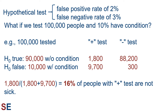Of the 10,000 individuals that do have the condition, the 3% false negative rate will result in 300 individuals getting a negative test and the remaining 9,700 individuals getting a positive test result. A total of 1,800 plus 9,700 equals 11,500 individuals receive a positive test result. Of those, 1,800 are individuals that don't have the condition. That means 1,800 divided by 11,500 equals 16% of people with a positive test result are, in fact, not sick. So even though our test is pretty good — 97% or 98% accurate — it returns a mistake 16% of the time.